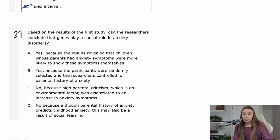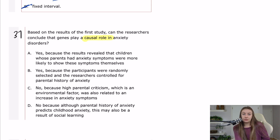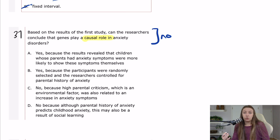Question 37 asks: based on the results of the first study, can the researchers conclude that genes play a causal role in anxiety disorders? The red flag here is 'causal role.' You need strong passage evidence of an experimental method with a true independent variable to establish causation. In this study, we don't see that. It's really hard for psychosocial researchers to perform a true experiment and extract a causal role, especially in mental disorder research. So the answer is probably not.